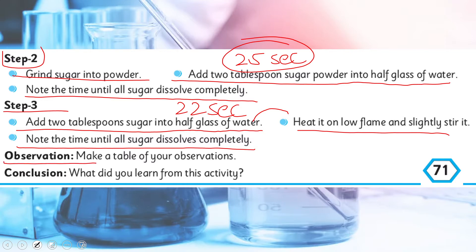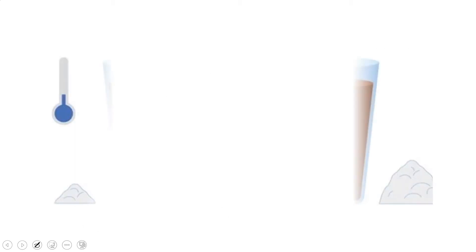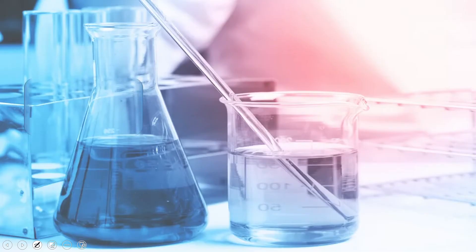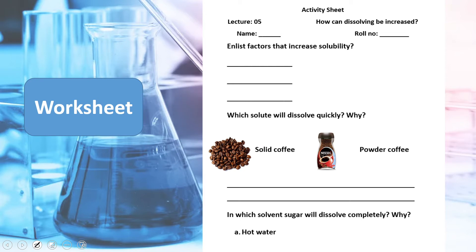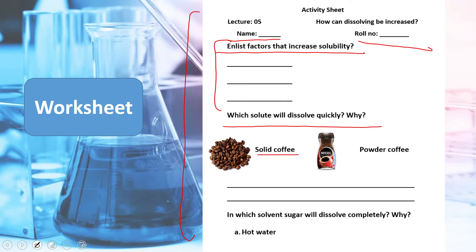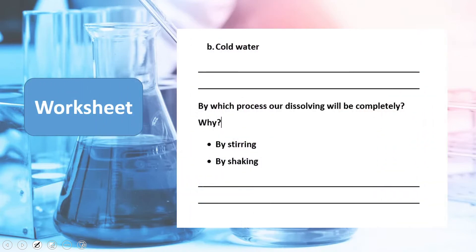Now make a table of your observations and write your conclusion — what did you learn from this activity? You will make a table for this. Write your name, roll number, and then list the factors that increase solubility. Answer: which solute dissolves more quickly — solid sugar or powdered sugar? Of course powdered sugar dissolves more. In which solvent does sugar dissolve completely and why — hot water or cold water? And by which process is dissolving completed — by stirring or shaking?